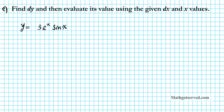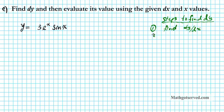Before we go ahead and find dy, let's quickly go over the steps. Steps to find dy: it's pretty straightforward. If you know how to differentiate, you should be able to find dy without any difficulty. Step number 1 is to find the derivative using the dy dx notation. Step 2, isolate dy by multiplying both sides by dx, and that gives you dy on the left side.